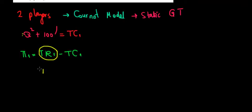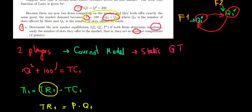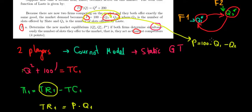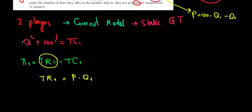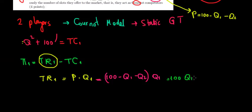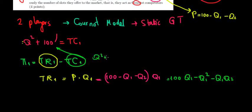Total revenue for the first company equals price times quantity sold by the first company. The price includes quantities from each company. Writing the price function: P = 100 − Q1 − Q2, since opening the brackets gives minus. So total revenue for firm 1 = (100 − Q1 − Q2) × Q1 = 100Q1 − Q1² − Q1·Q2. The total cost is Q1² + 100.